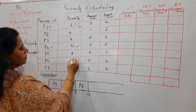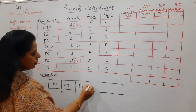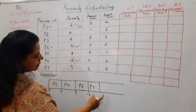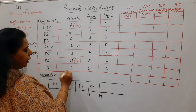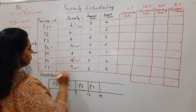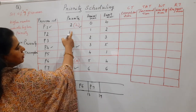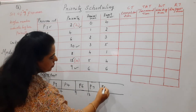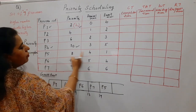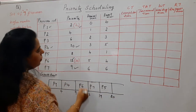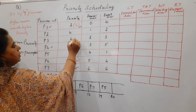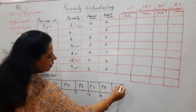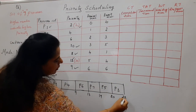The remaining priorities are 8, 12, 9, 6, and 4. The highest is 12, so P6 is scheduled. P6 has burst time 4, ending at time 13. Next is P7 with priority 9 and burst time 6, ending at time 19. After that, among the remaining priorities 4, 6, and 8, the highest is 8 — that is P5 with burst time 1, ending at time 20.